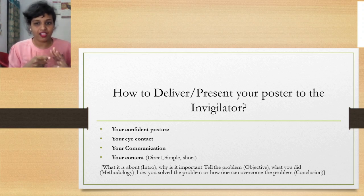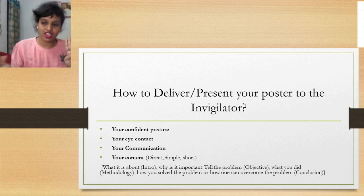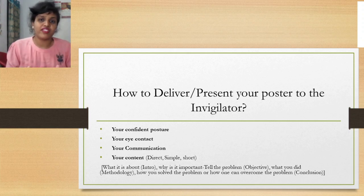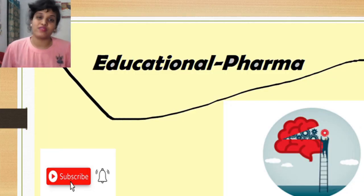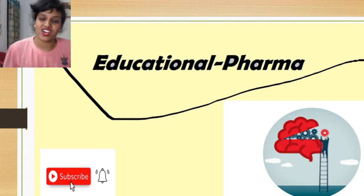If the invigilator gets hooked, they'll ask you to elaborate — then you can go deeper. Within three minutes, cover: the introduction and why it is important, the problem or purpose, the methodology — what you did and how, and the conclusion. Practice this before in front of a mirror, in front of people, and during the conference before the invigilator comes. Then when the invigilator arrives, tell it nicely with a smile. I hope you've learned a lot. Thank you — stay tuned, subscribe, and press the bell icon.